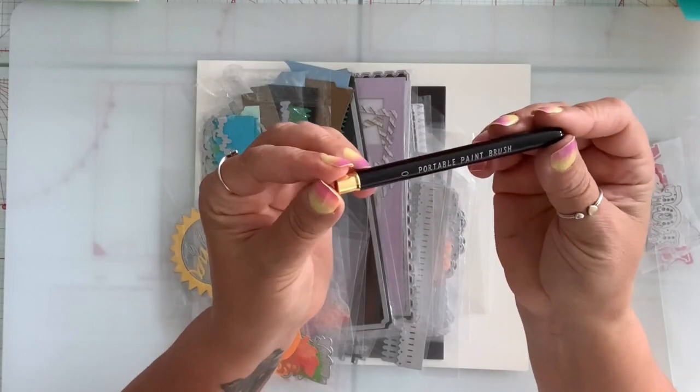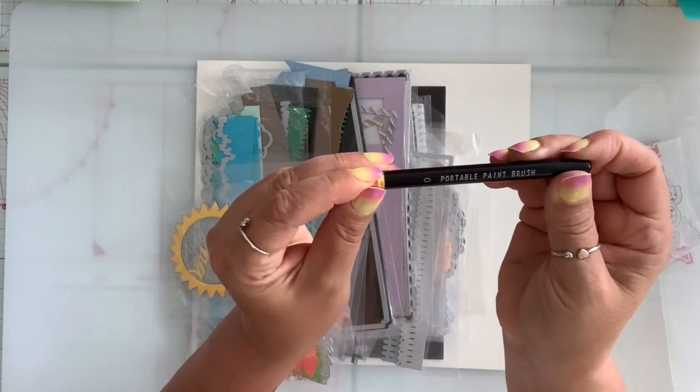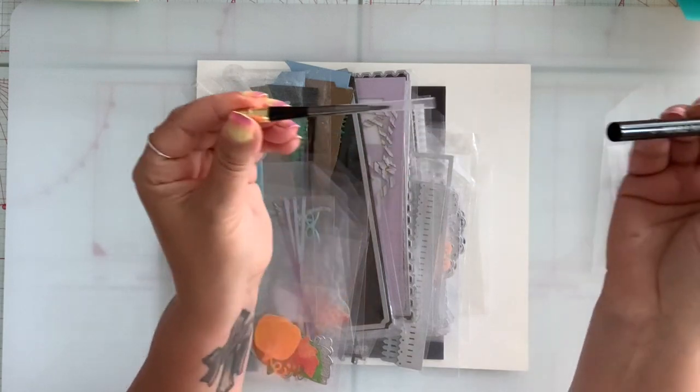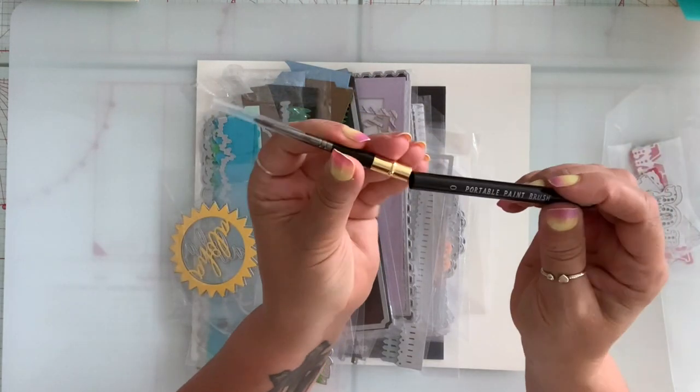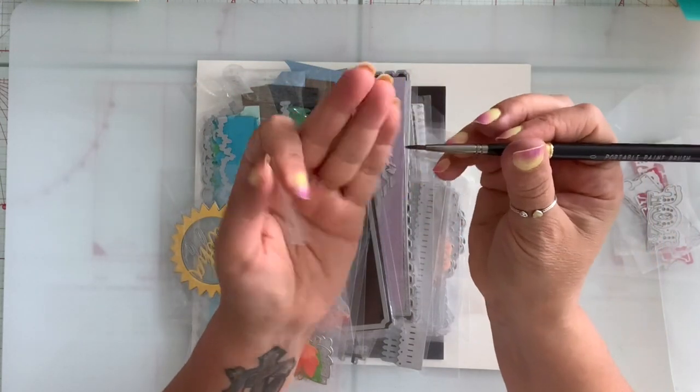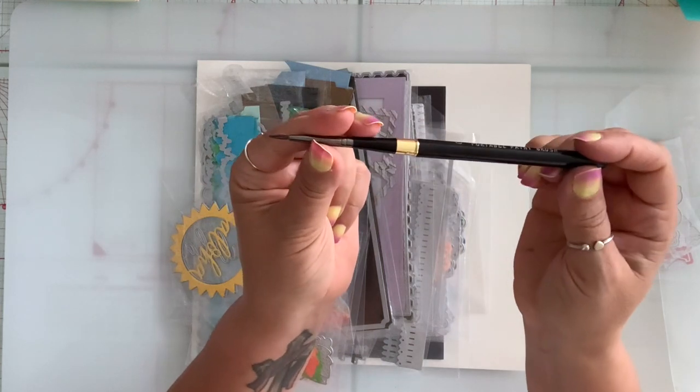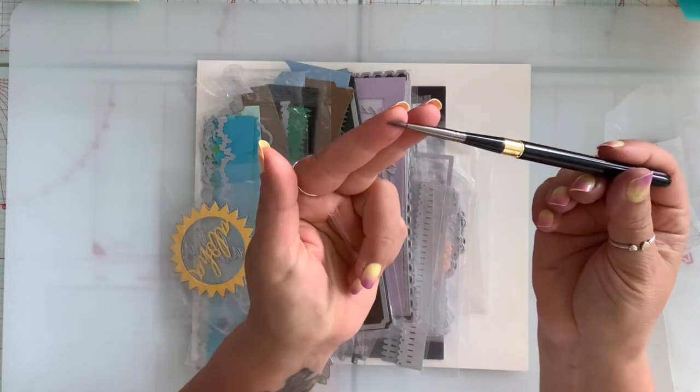The first thing I picked up is this portable paintbrush and I got this to do watercoloring. So basically you just pull it out and put it like that and you can use it. I think I got size one. I didn't want to buy too many before I see how they perform.